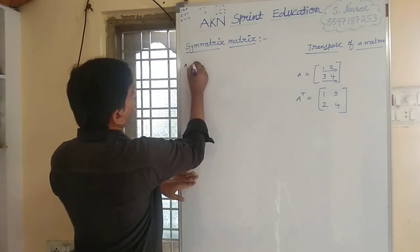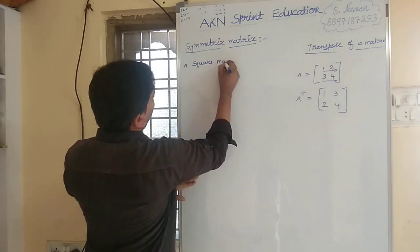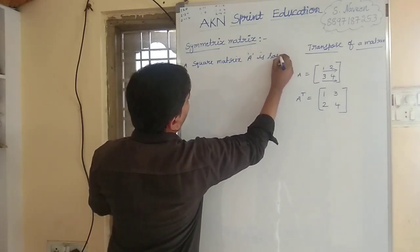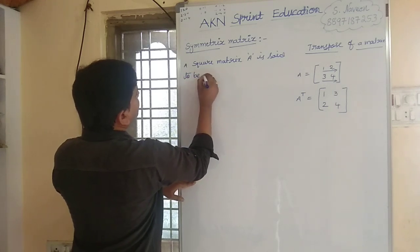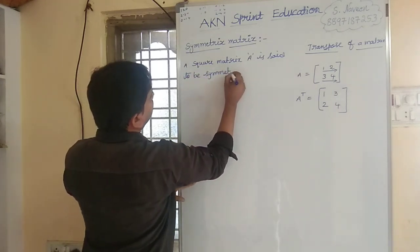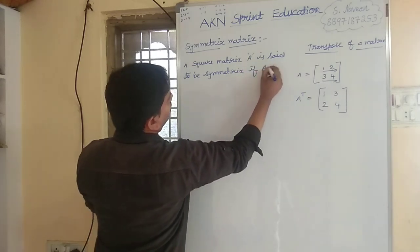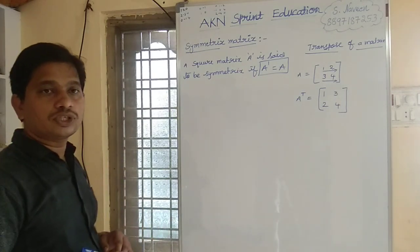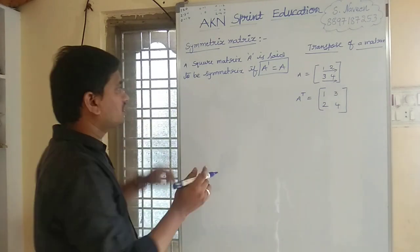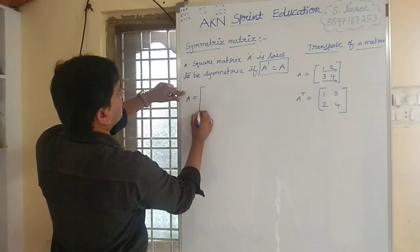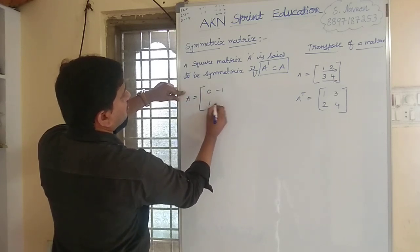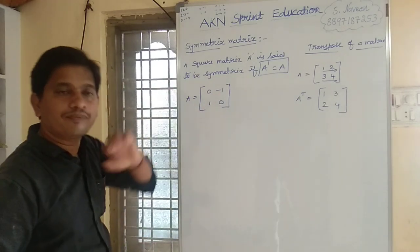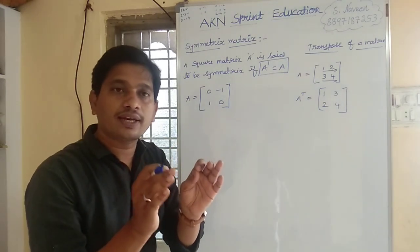A square matrix A is said to be symmetric if A transpose is equal to A. Consider a matrix A, for example: 0, minus 1, 1, 0. This is the given matrix A. Now we need to find A transpose.